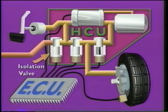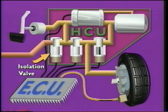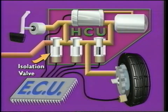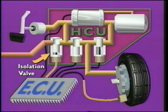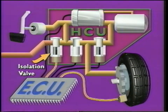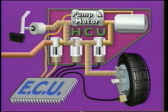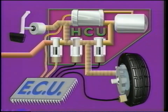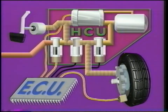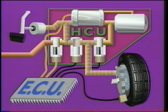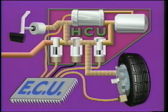During Traction Assist operation, the ECU monitors wheel rotation speed as the vehicle accelerates. If the ECU detects that a drive wheel has lost traction, it sends signals to the HCU. This activates the electric pump and motor, which generates hydraulic pressure. The HCU sends this pressure to the affected brake calipers, which in turn applies the brakes. This slows wheel rotation, thus helping the tires maintain traction.